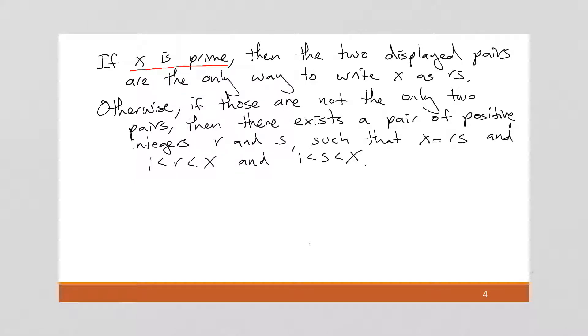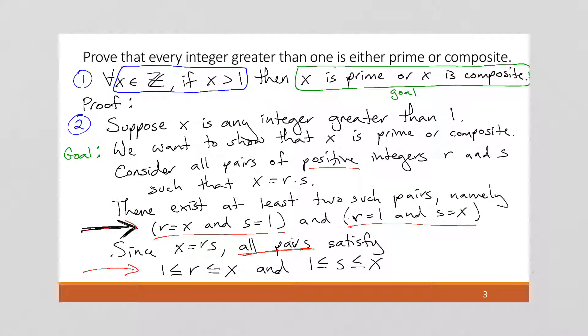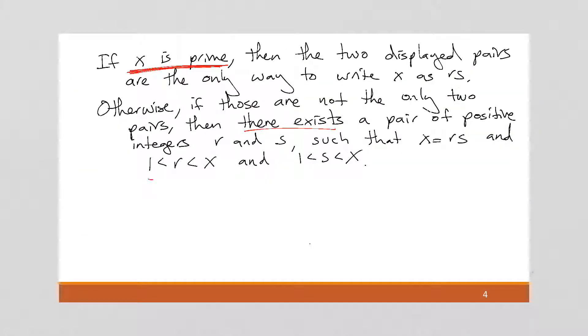So we're saying if X is prime, then those are the only two, 1 and X. And if those aren't the only two, then there's more. And if there's more, we know that R and S from our previous slide, they were always going to be between or including 1 and X. So if they're not 1 and X, we know they must be between 1 and X. And that fits the definition of composite.